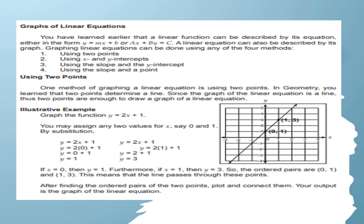Graphs of a linear function: You have learned that a linear function can be described by its equation, either in the form y equals mx plus b or ax plus by equals c. A linear equation can also be described by its graph. Graphing a linear equation can be done using any of four methods: using two points, using the x and y intercepts, using the slope and the y-intercept, or using the slope and a point.